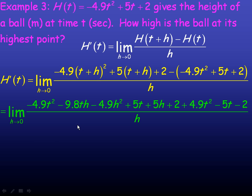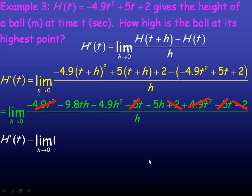Notice once again, like in the example on the previous page, we have some terms that are opposite, so they add to zero. The negative 4.9t squared and the 4.9t squared add to zero, as do the 5t and negative 5t, and also the positive 2 and negative 2. So we only have three terms left, and they all have h's in them, so this h will divide into all three. Dividing negative 9.8th by h gives negative 9.8t, this becomes minus 4.9h, and 5h divided by h is just 5.